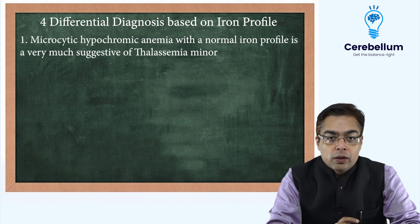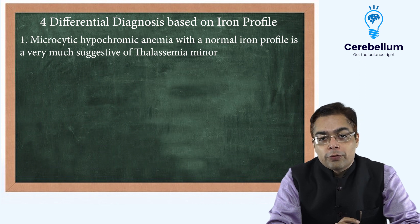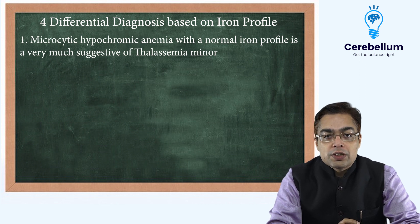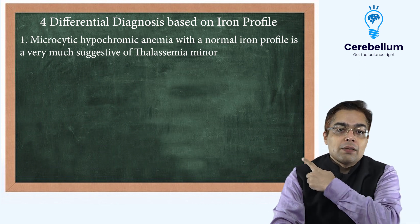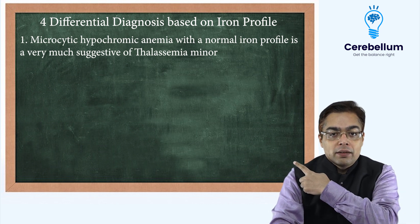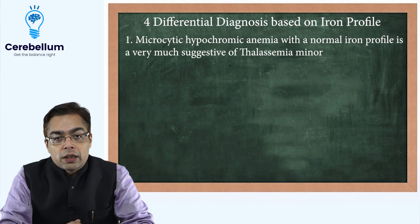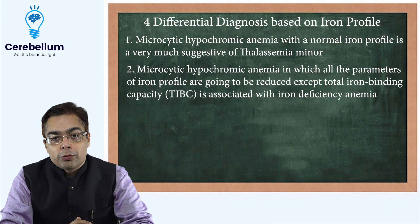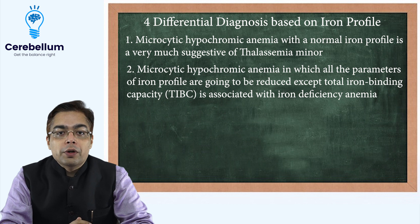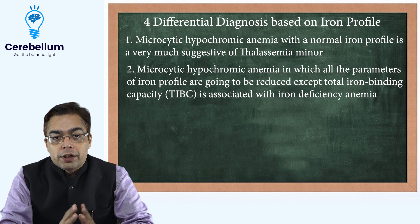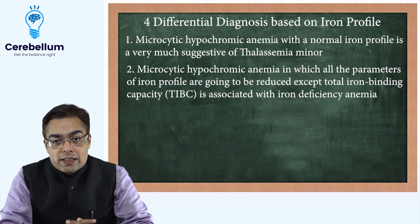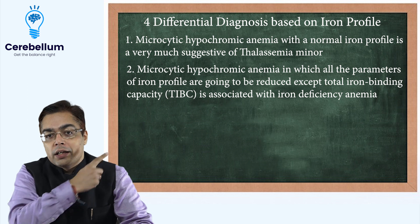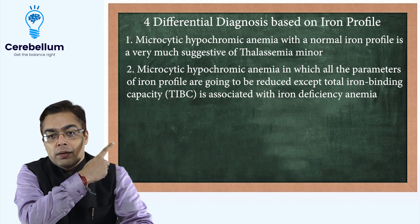Microcytic hypochromic anemia with a normal RN profile is very much suggestive of thalassemia minor. When we talk about microcytic hypochromic anemia in which all the parameters of the iron profile are going to be reduced except TIBC, it's associated with iron deficiency anemia.